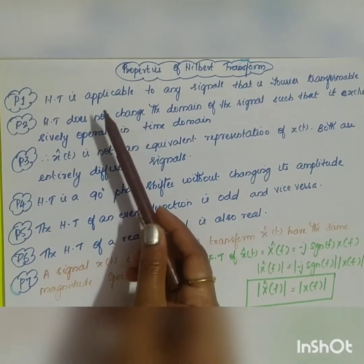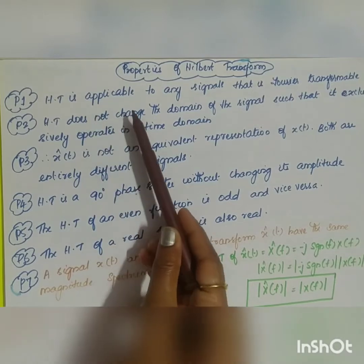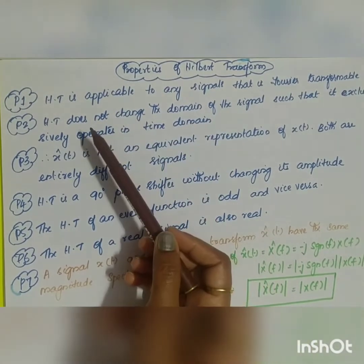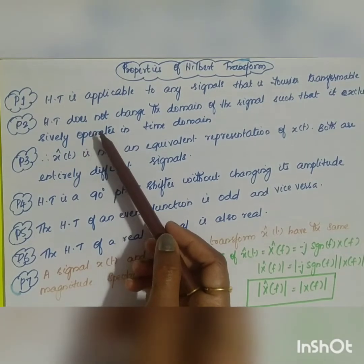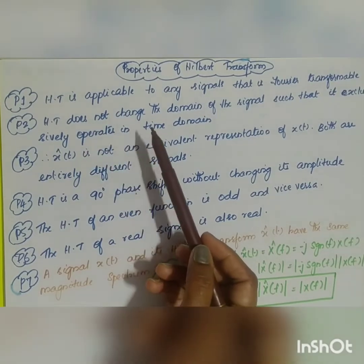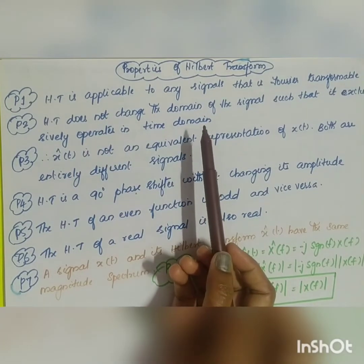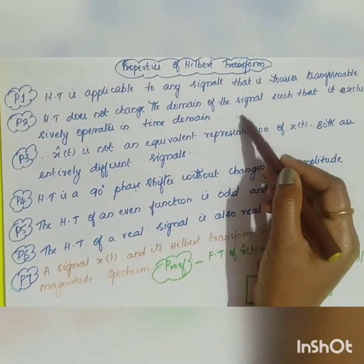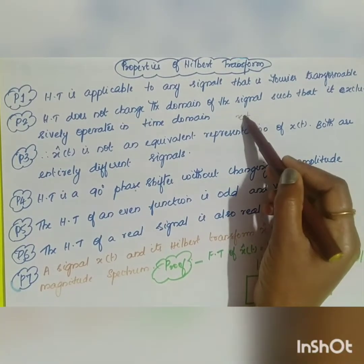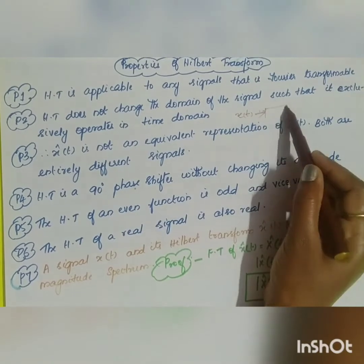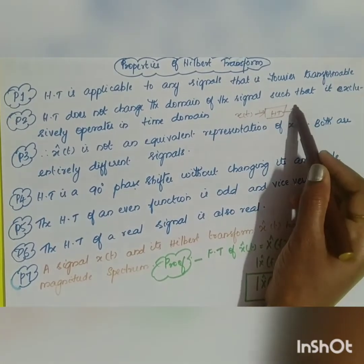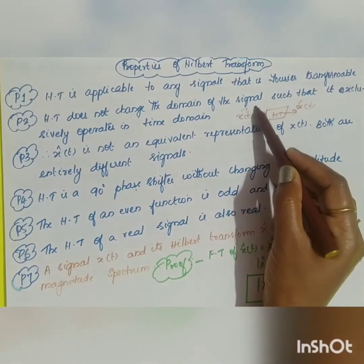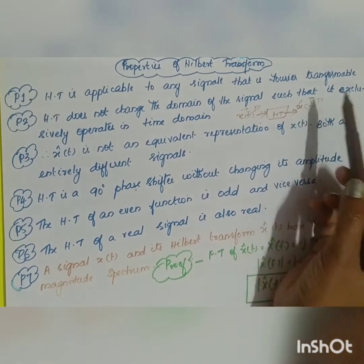The first property is the Hilbert transform is applicable to any signal that is Fourier transformable. The second property is the Hilbert transform does not change the domain of the signal — it exclusively operates in the time domain. We know that x(t) applied to the Hilbert transform gives output x̂(t), so both are in the time domain; there is no domain transformation.